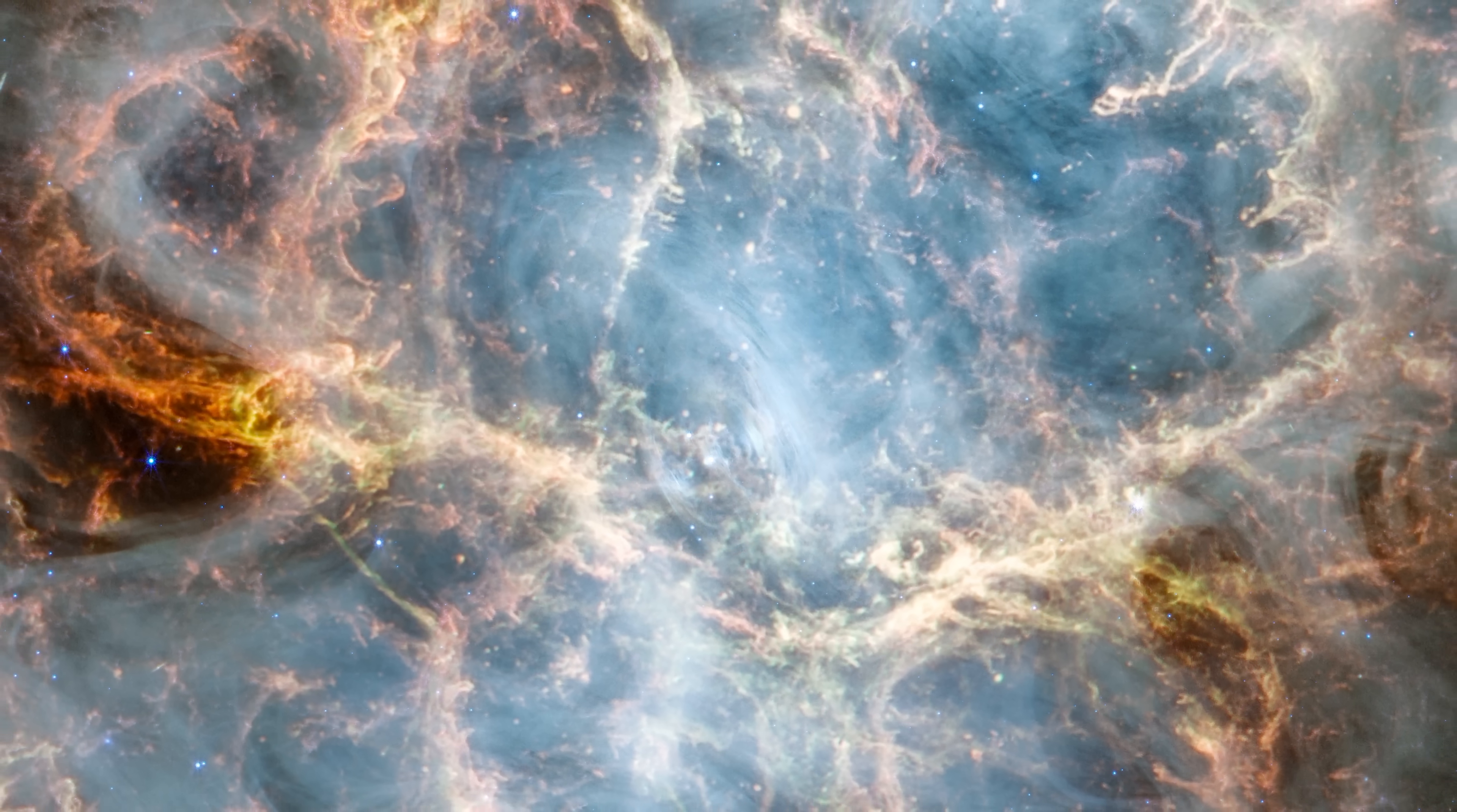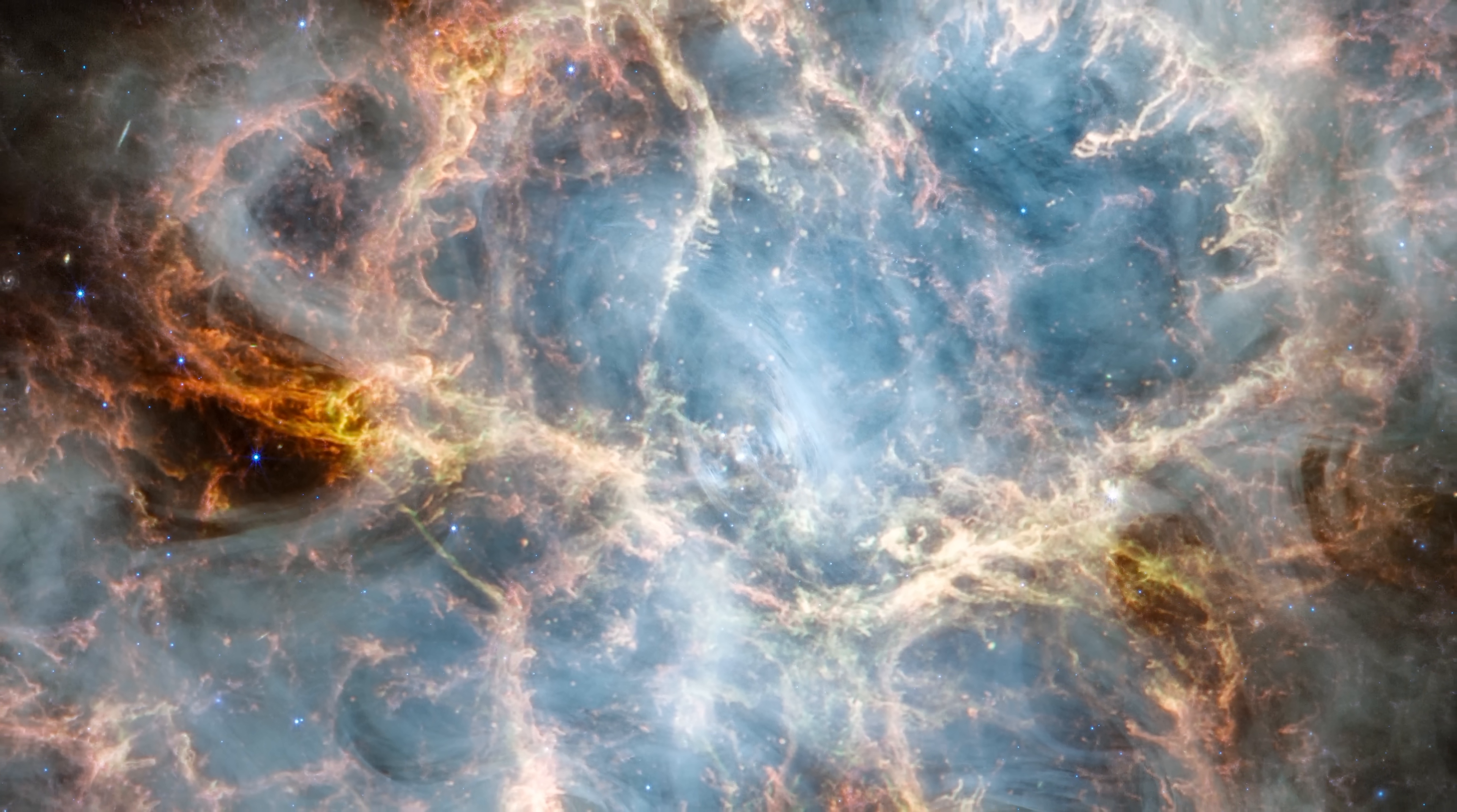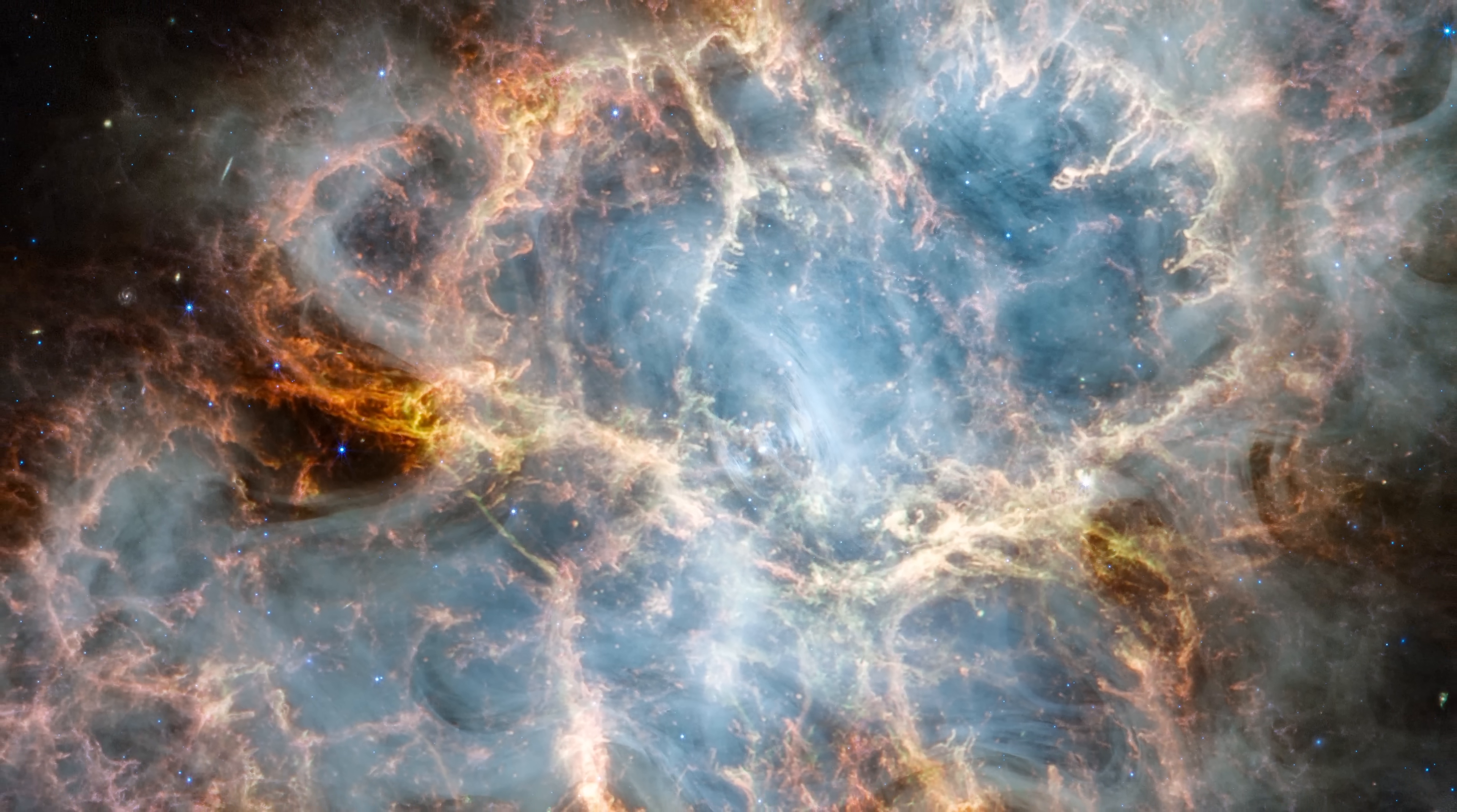The Crab Nebula is made up of many components, including ionized sulfur, seen here in red-orange, dust in yellow-green, and synchrotron emission in a milky white.